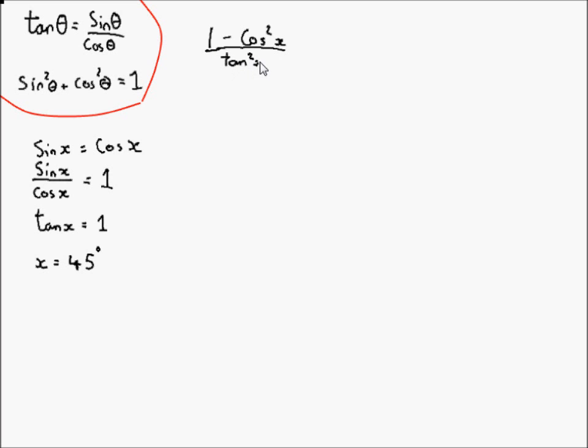Feel free to skip ahead and try and solve this yourself, but this is just going to be a worked solution. Now, 1 minus cos squared theta, using this second identity, we can arrange this to get 1 minus cos squared theta, and then you'll just be left with sin squared theta.